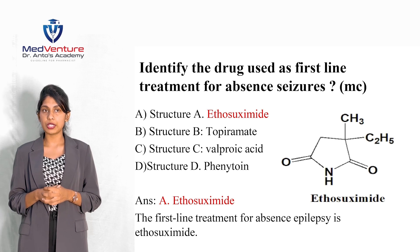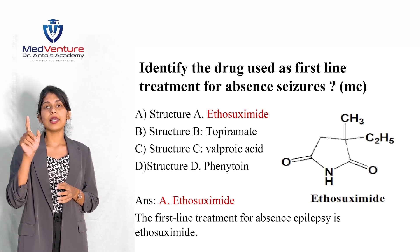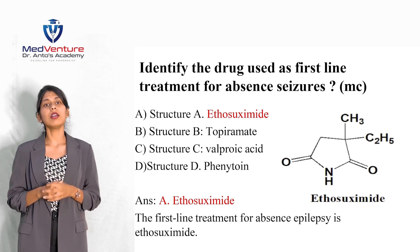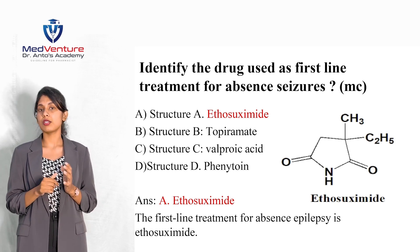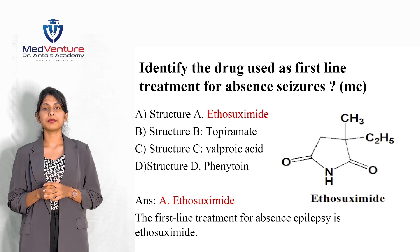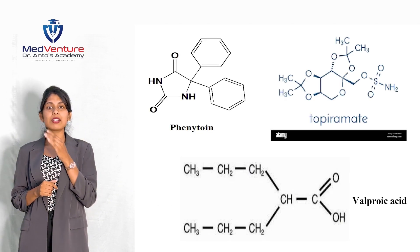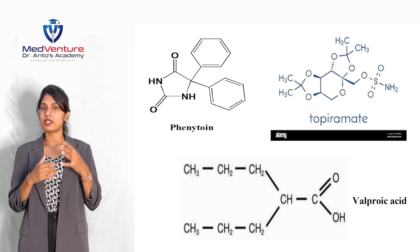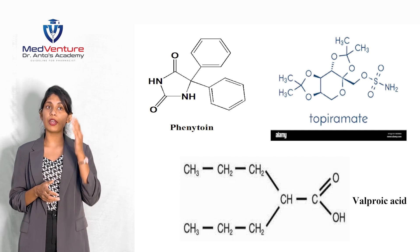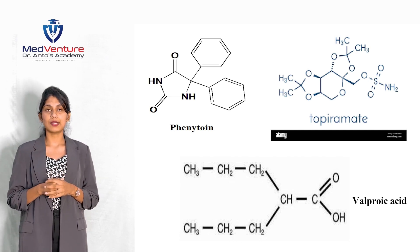Identify the drug used as first-line treatment for absence seizures. The answer is ethosuximide — it is the first-line drug for absence seizures. A question may present different drug structures such as phenytoin, topiramate, and valproic acid to test identification.